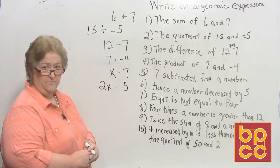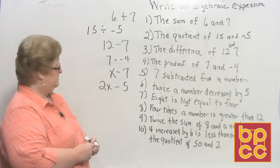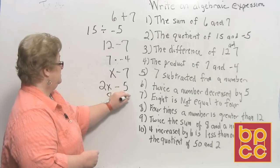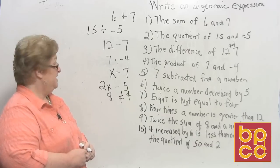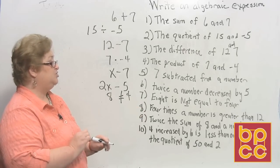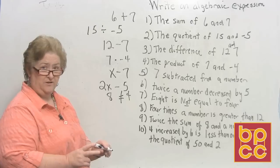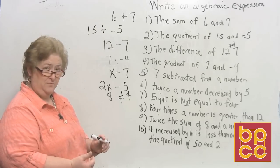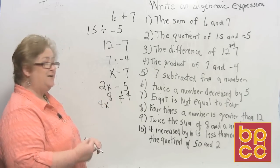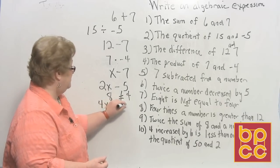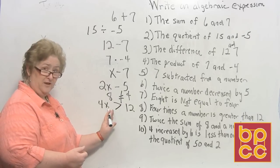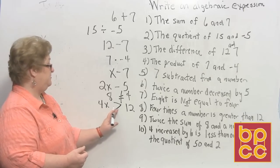Number 7: 8 is not equal to 4. Remember your inequality signs — 8 is not equal to 4. Number 8: 4 times a number is greater than 12. We're going to use our inequality sign here. 4 times a number is 4x, and 4x is greater than 12. Remember, reading left to right, the mouth is open toward the greater value — greater than.